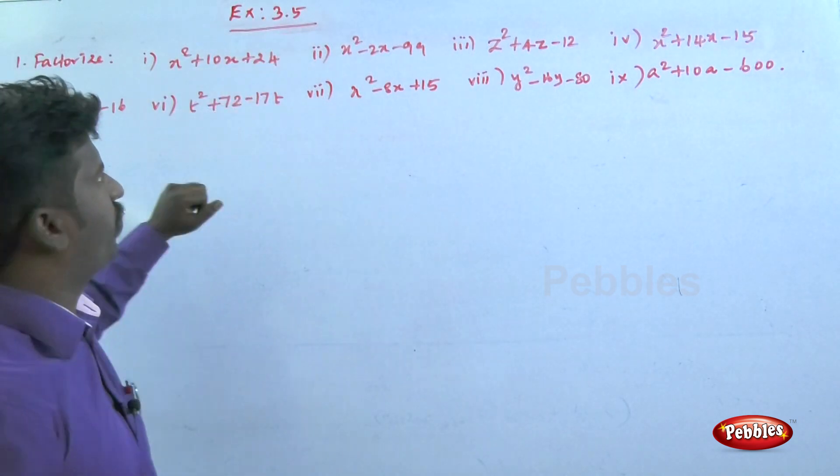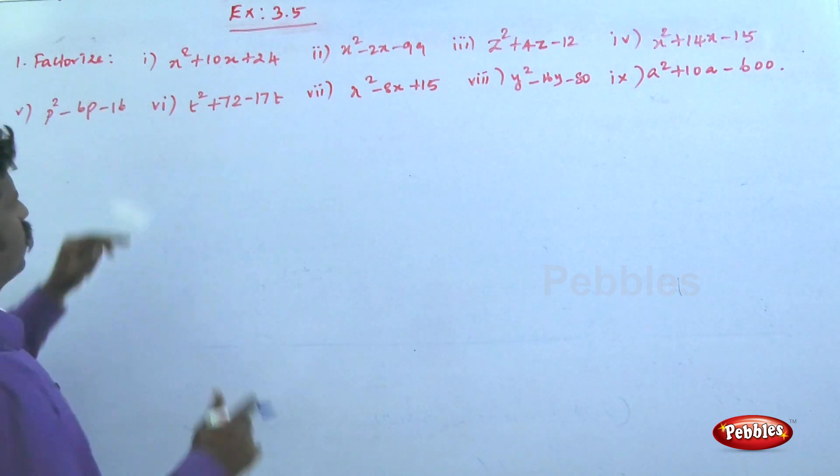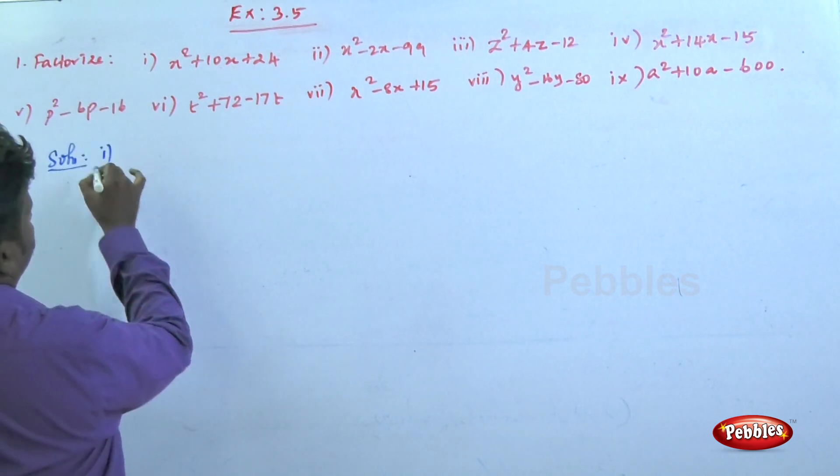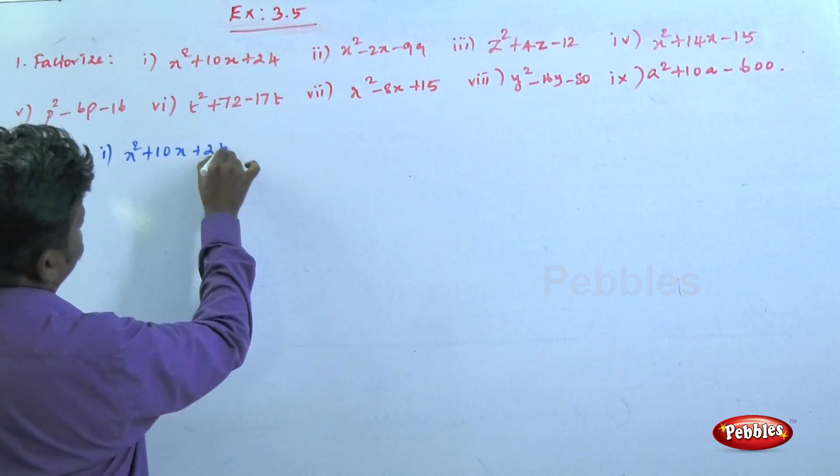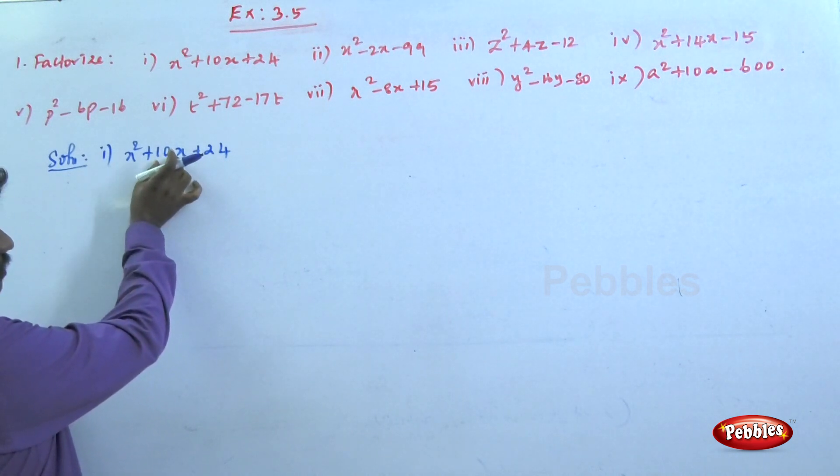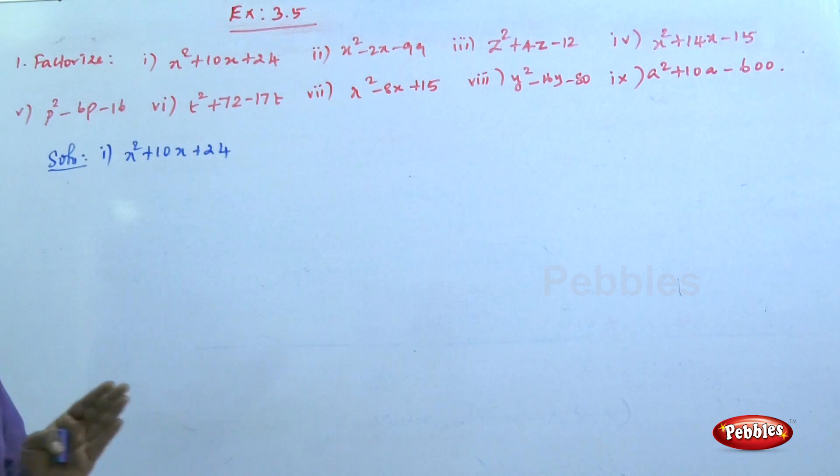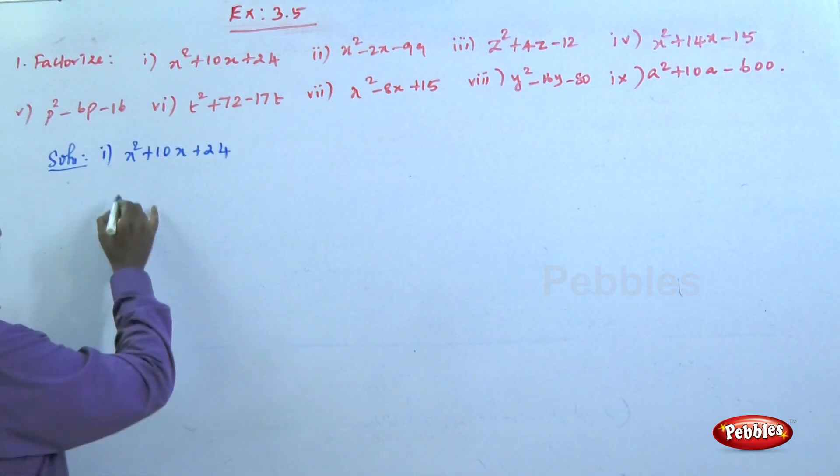Exercise number 3.5. The first problem: factorize x² + 10x + 24. This is a quadratic equation. The quadratic equation format - the coefficient, the two factors or two roots.